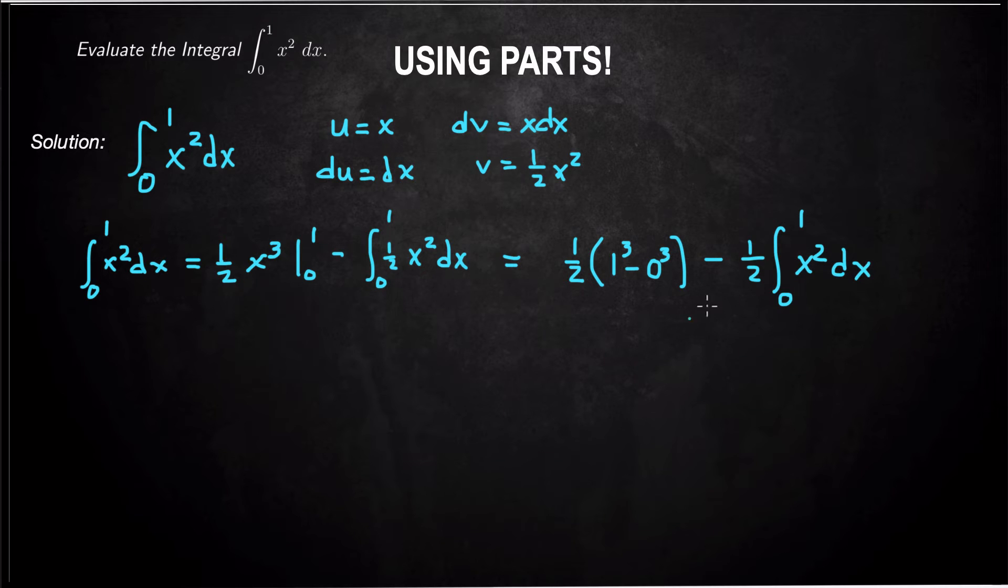So I have a negative 1 half integral of x squared on the right and a 1 times integral of x squared dx on the left. I'm going to combine that on the left hand side. That's going to give me 1 plus 1 half times the integral from 0 to 1 of x squared dx equals 1 half.